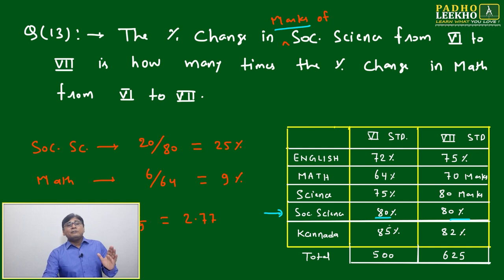But given marks means we have to find the individual marks of Social Science in sixth and seventh. In sixth, base is 500, then 80 percent will be 80 itself. But in seventh, base is 625, it will be different. Social Science, okay, the question is asking...